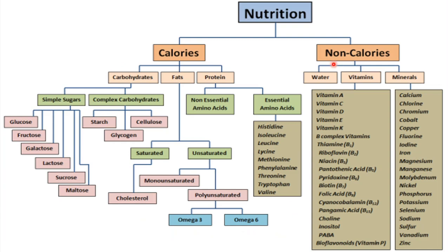Here is the detailed classification of nutrition. Nutrients are classified as caloric and non-caloric. Caloric includes carbohydrates, fats, and proteins — all included in macronutrients. Carbohydrates are further classified as simple sugars and complex sugars; fats as saturated and unsaturated fats; proteins as non-essential and essential amino acids. We are going to learn about food chemistry of micronutrients, which fall under the non-caloric class.